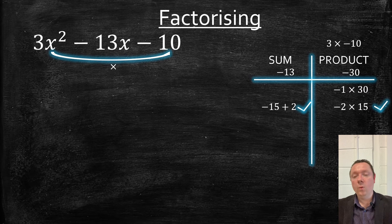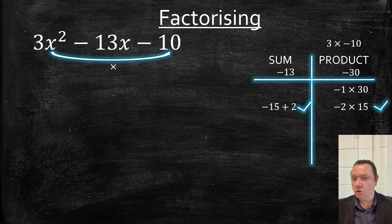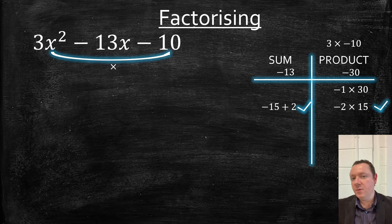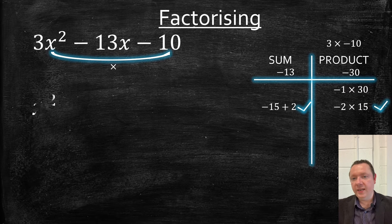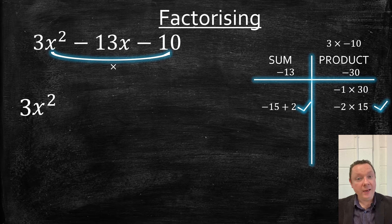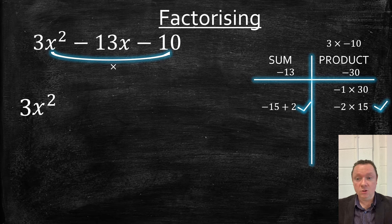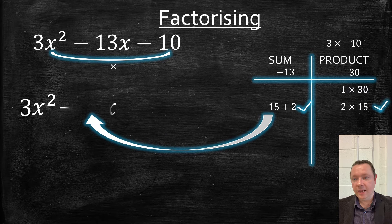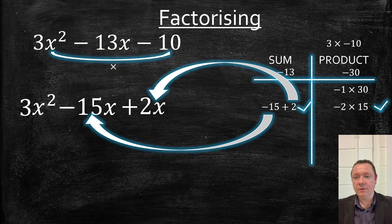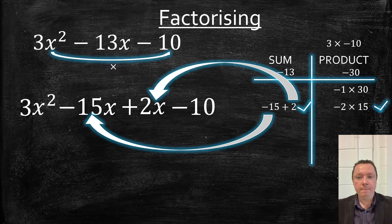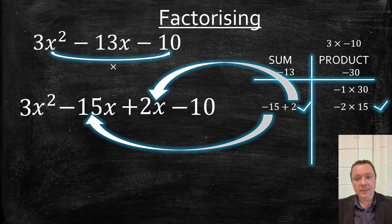And then we can move on to our next step, which changes slightly. It doesn't go straight into brackets. We're now going to split the middle term. So we've got 3x squared still. But instead of writing minus 13x, we're going to swap out our minus 15 add 2. So we've got minus 15x, add 2x, and then we've still got minus 10 on the end.